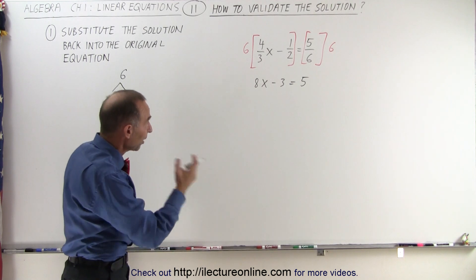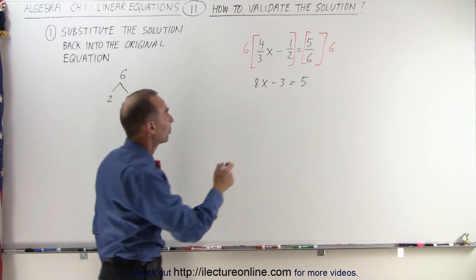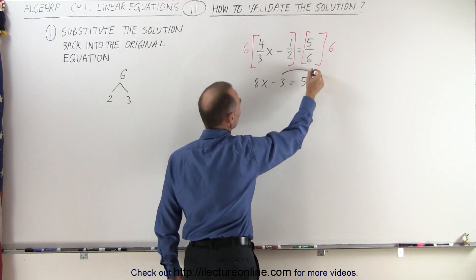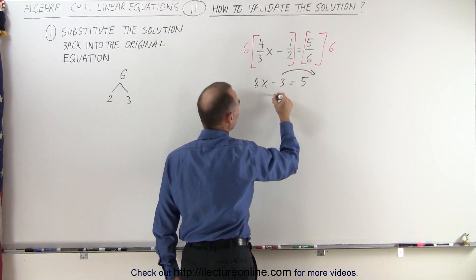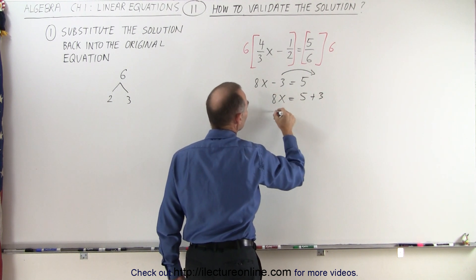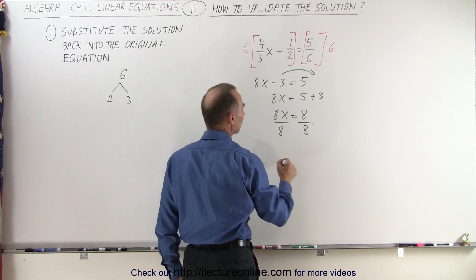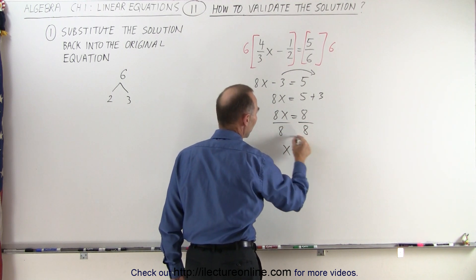At this point we want to separate the terms with the x and the terms without the x. In other words, we want to move the negative 3 to the right side. That gives us 8x is equal to 5 plus 3. 8x equals 8, and then if we divide both sides by the numerical coefficient of x, we get x is equal to 1.